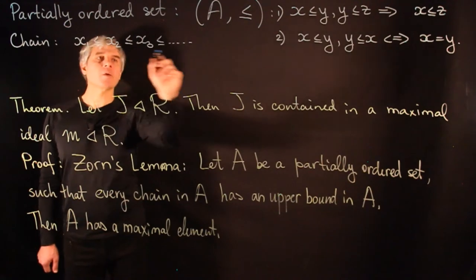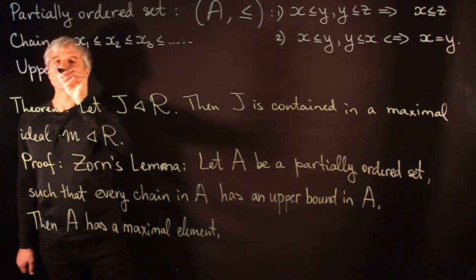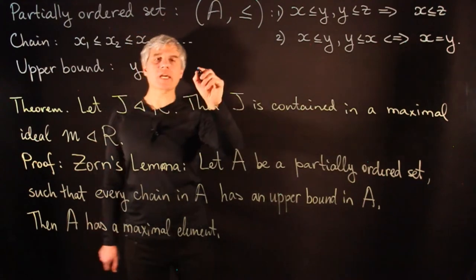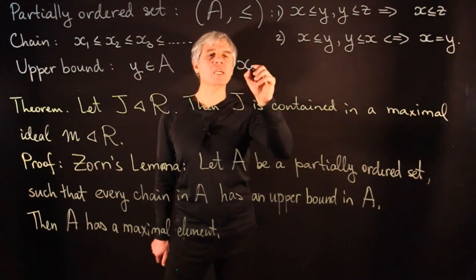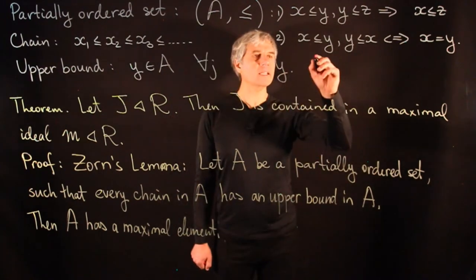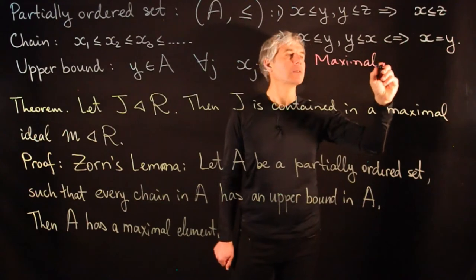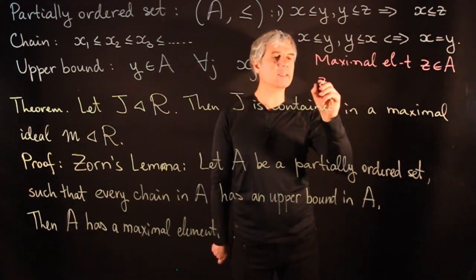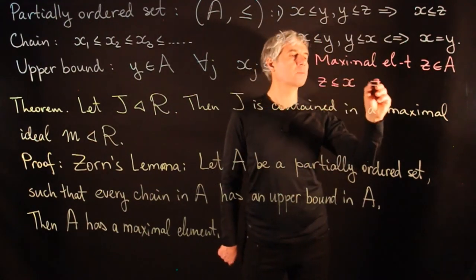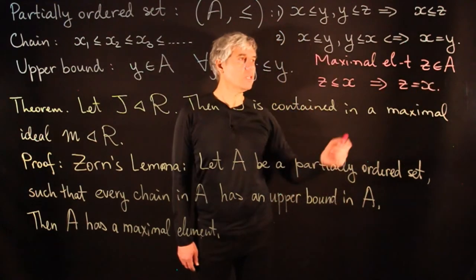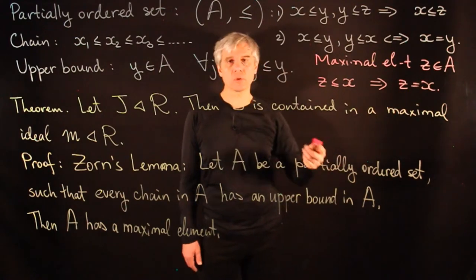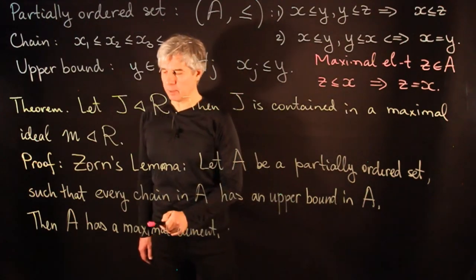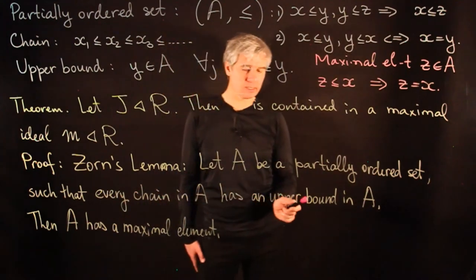An upper bound of a chain is an element Y in A such that for all j, X_j ≤ Y. A maximal element Z in A is an element with the property that if Z ≤ X, then Z = X. In general, a maximal element in the set A is not unique and need not exist. Zorn's lemma says that maximal elements exist provided that every chain in A has an upper bound.